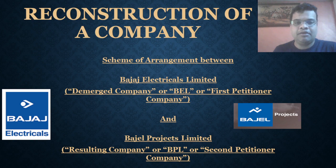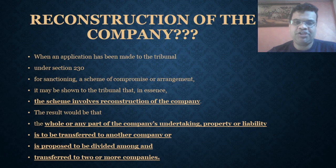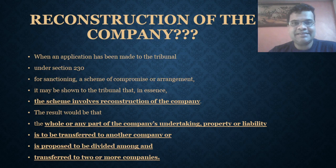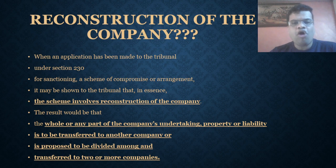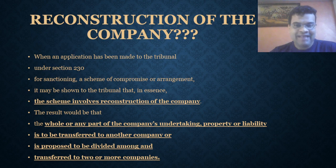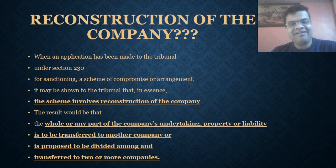When an application has been made to the NCLT under section 230 of the Companies Act for sanctioning a scheme of compromise or arrangement, it may be shown to the tribunal that the scheme involves the reconstruction of the company. This reconstruction would result in the whole or part of the company's undertaking, property, or liability being transferred to another company, or being divided among and transferred to two or more companies.